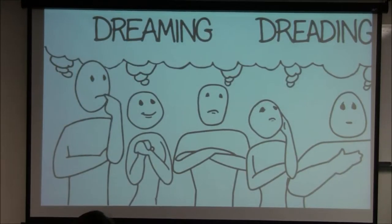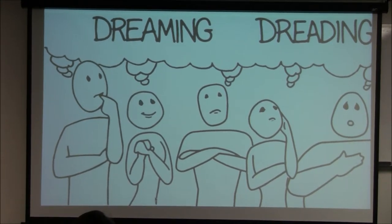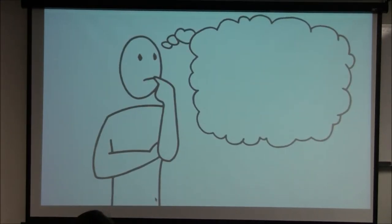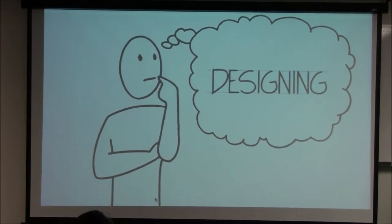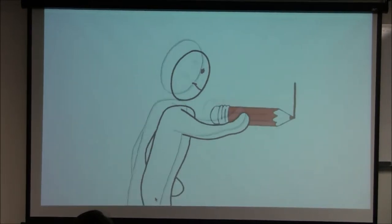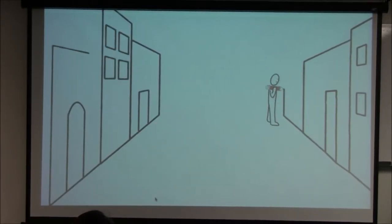Whether dreaming or dreading, our role in the future we imagine is usually passive, where the future is something that happens to us and to those around us. But there's a third way we can think about the future. Between dreaming and dreading lies designing. For designers, the future isn't a far-off place. It's a place where they work every day. Design is a form of activism. We imagine the future we want, then pick up the tools to start building it.